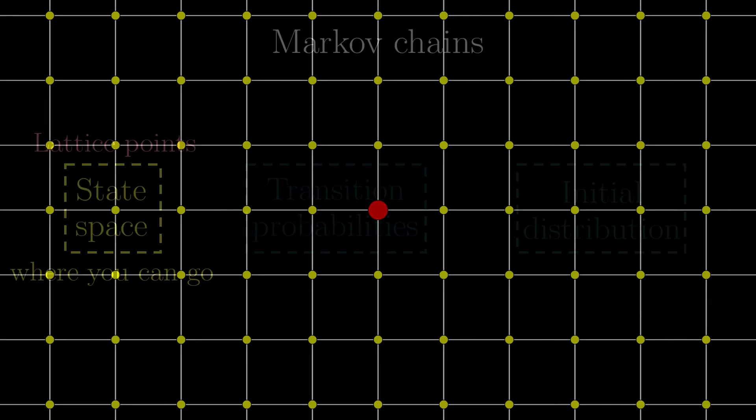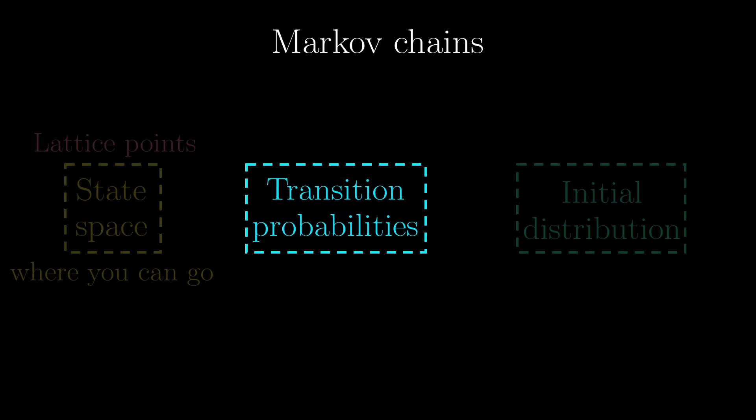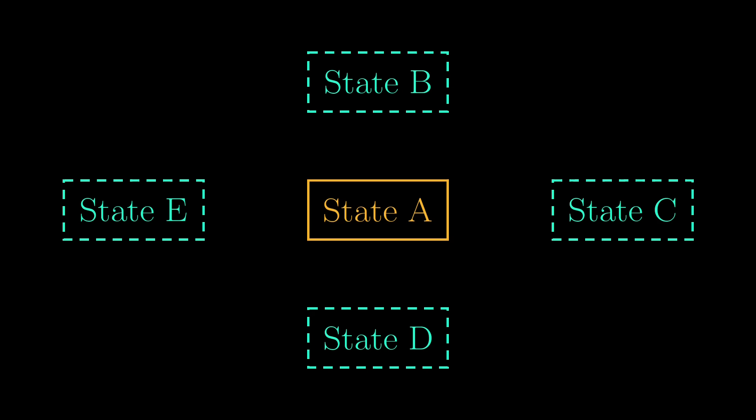Second thing is the transition probabilities, because Markov chains are not static. Let's say you are now at state A, with four other neighbouring states in the state space. In your next step, you can transition to any other states, and in general, you might also go back to itself, depending on your setup.